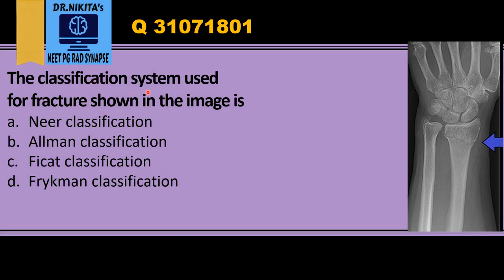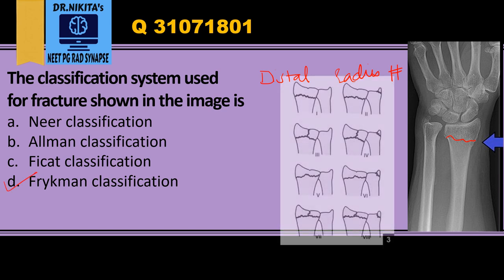The classification system used for the fracture shown in the image — first we need to identify what fracture it is. This bone here is the radius and this is the ulna; we know that radius is a wider bone. So this is the radius, and we see there's a fracture in the distal radius. The question is asking about the classification system for distal radius fracture.